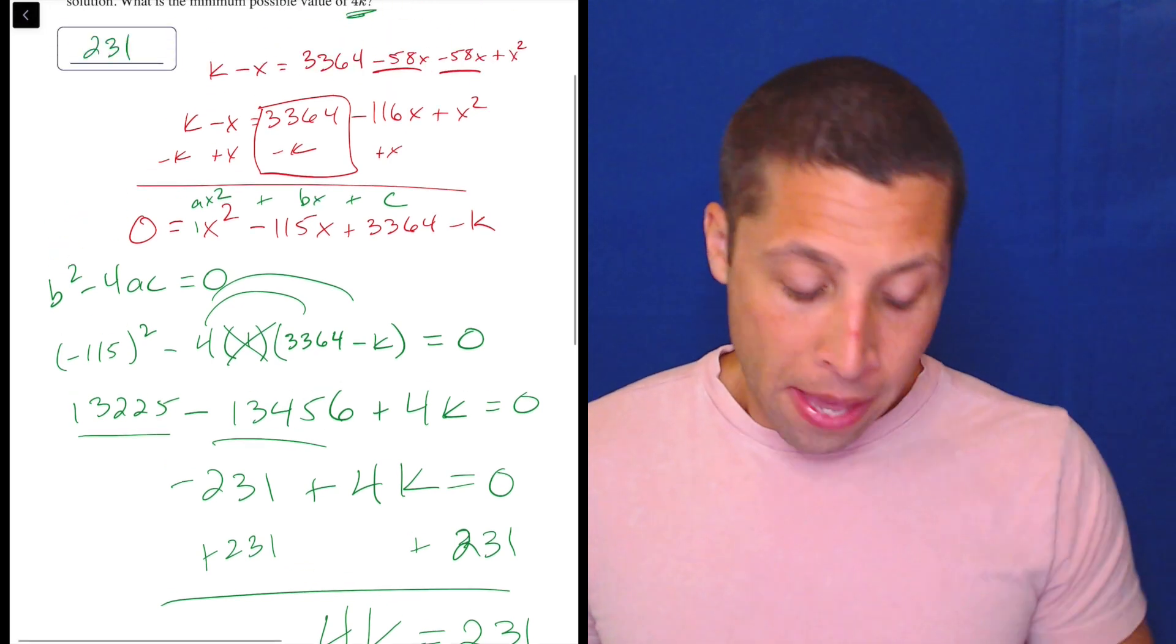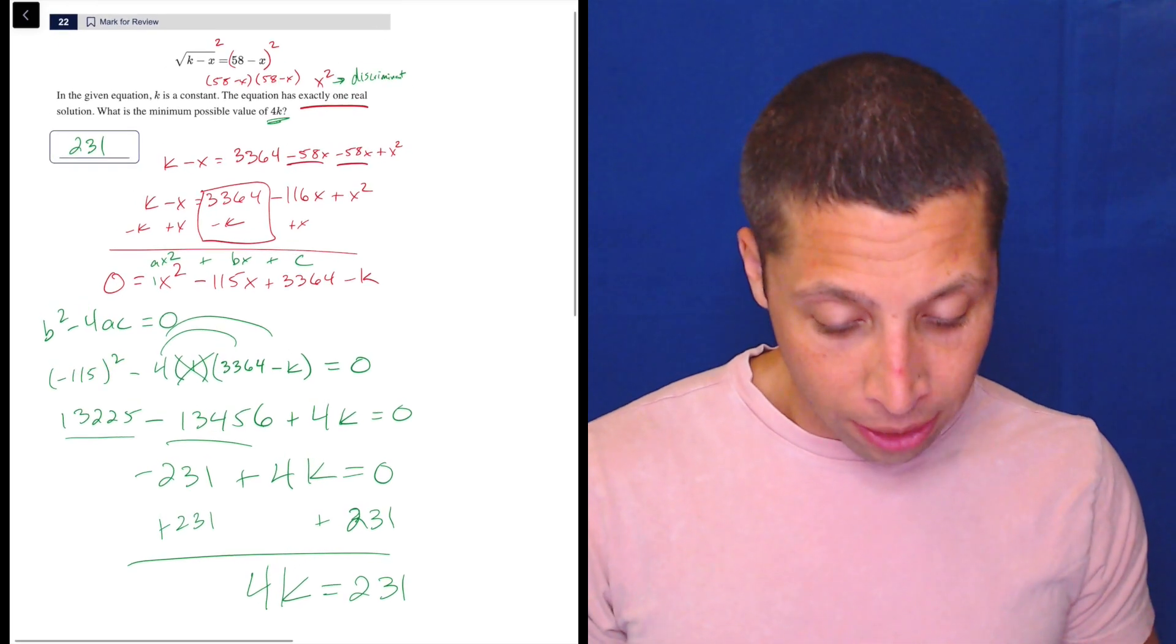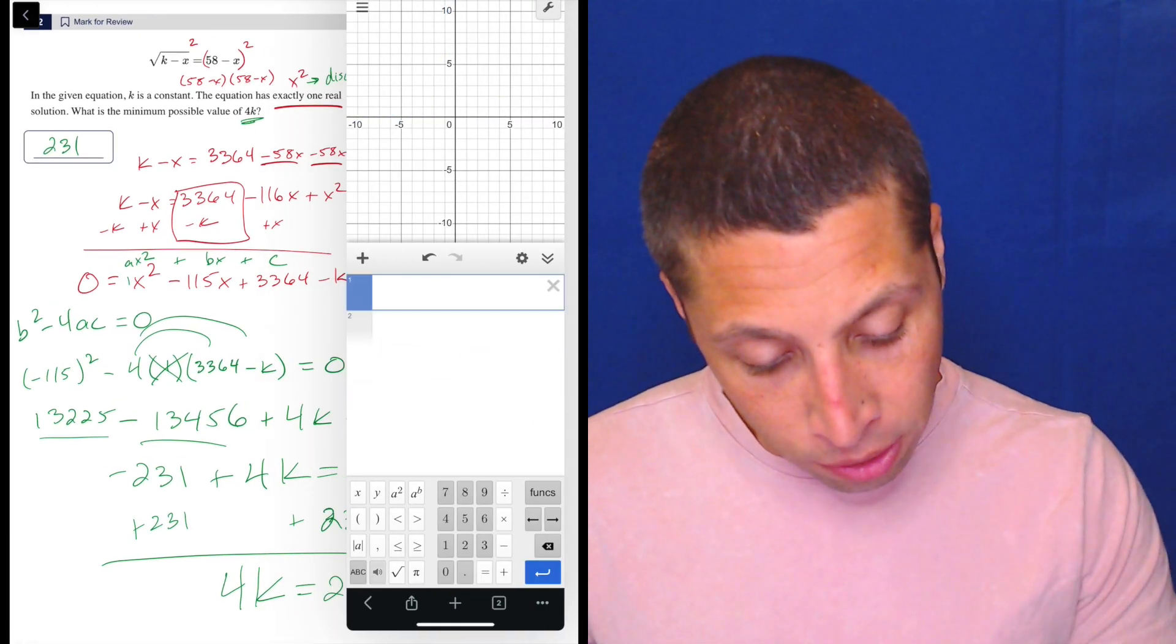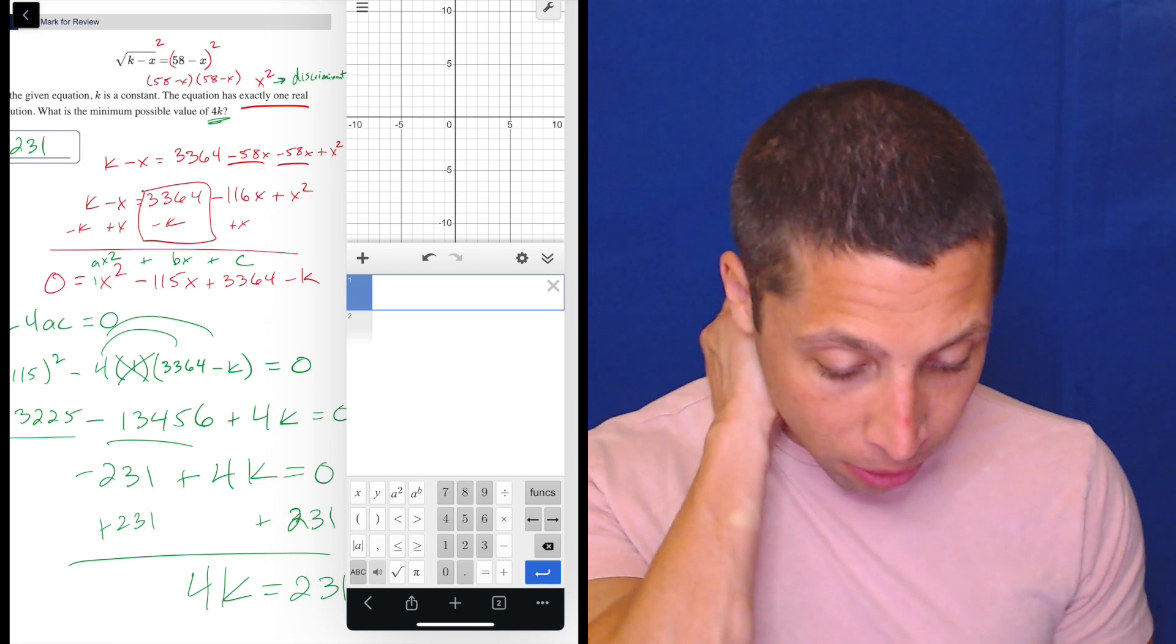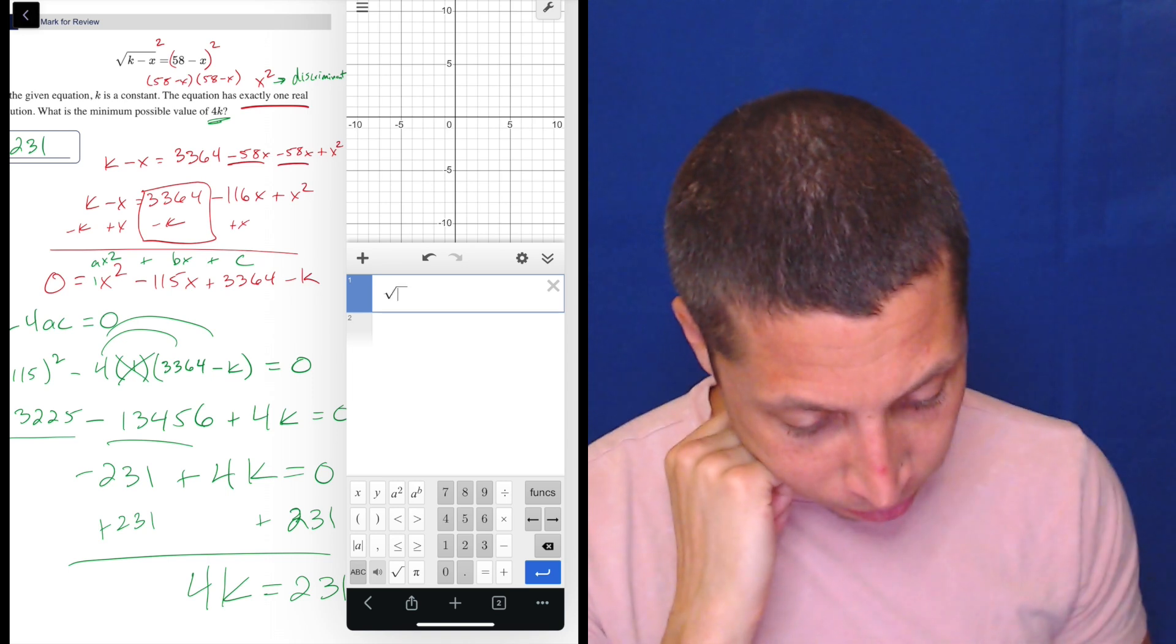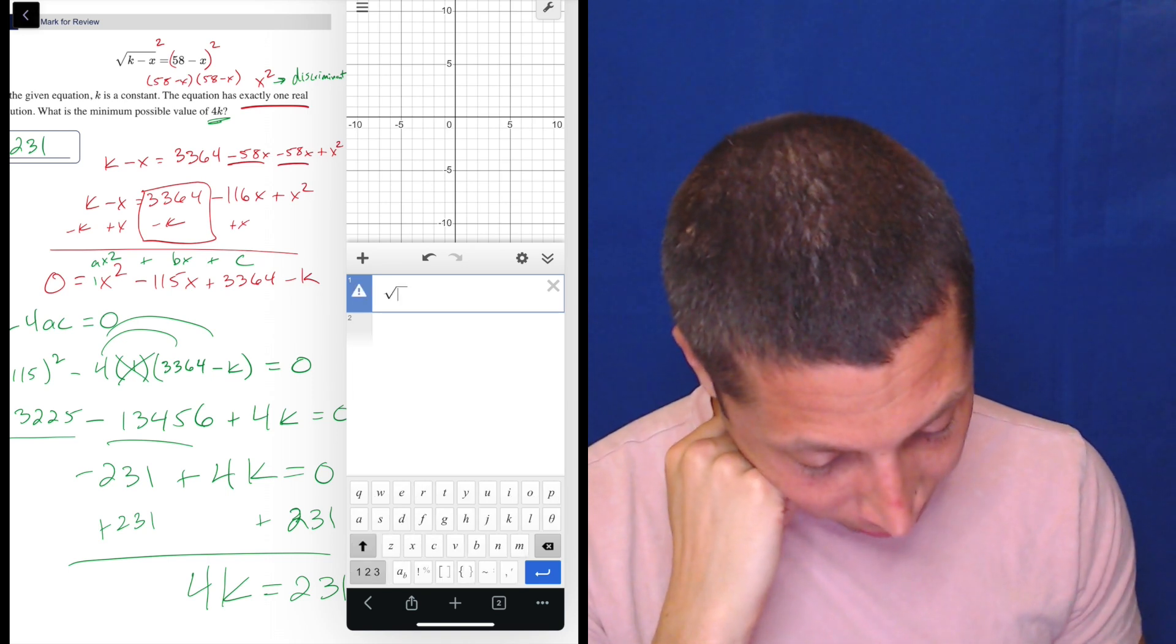Now, the reason I got this wrong originally, not to get too deep into it, but one thing we can do with Desmos is we can just put stuff in there and see what happens. So when I put this in, radical k, well, let's just do k,